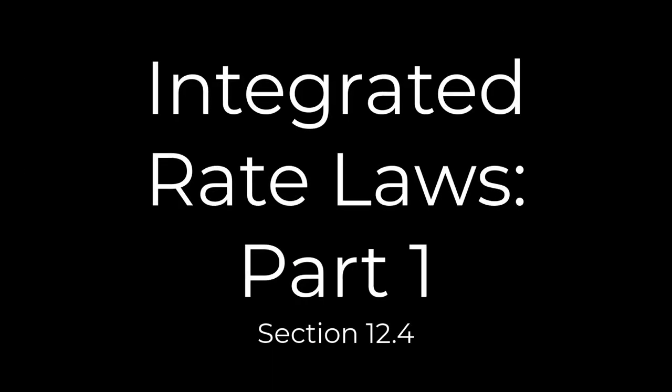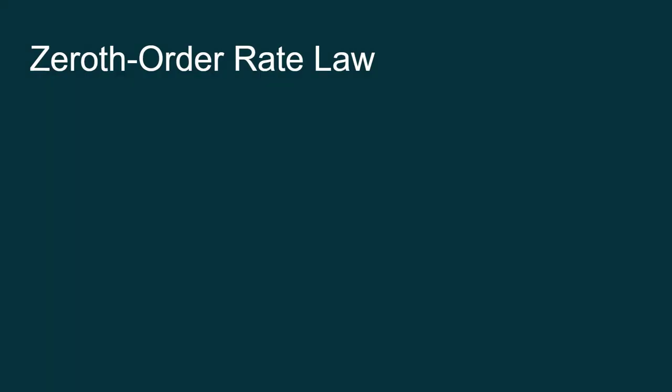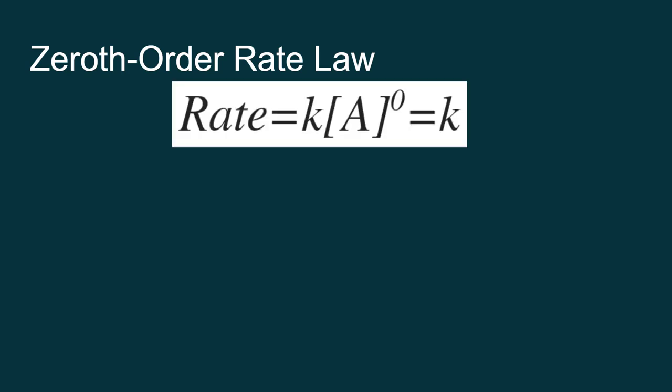In the last assignment, we learned how to find different reactant orders. I want to spend more time with that in this video. I'm going to start with something called a zeroth order reactant. Zeroth order means that the concentration of the reactant doesn't actually affect the rate. We could say rate equals K times the concentration of a reactant — we'll use a fictitious reactant A — raised to the zeroth power. Anything raised to the zeroth power is 1, so the rate is just equal to K. In other words, the rate is constant.